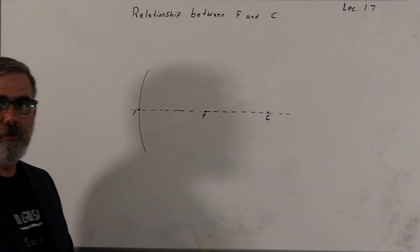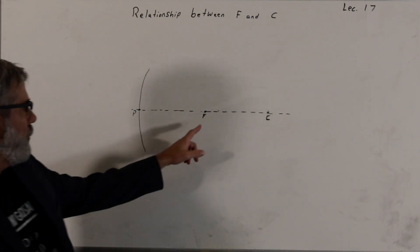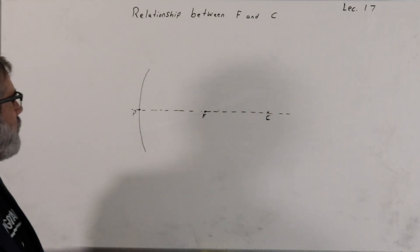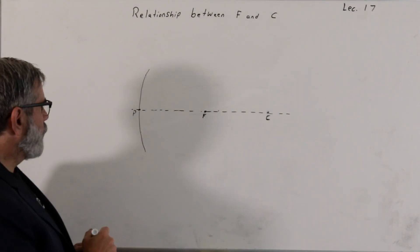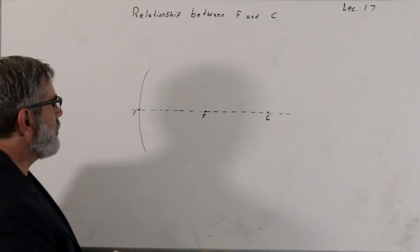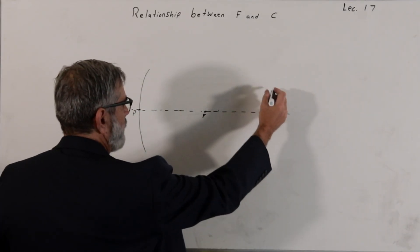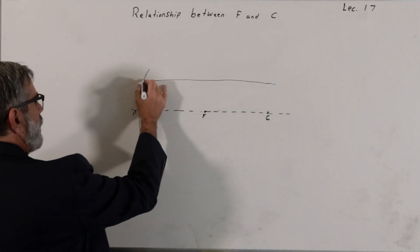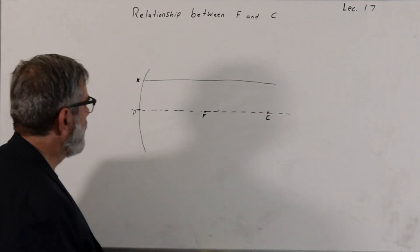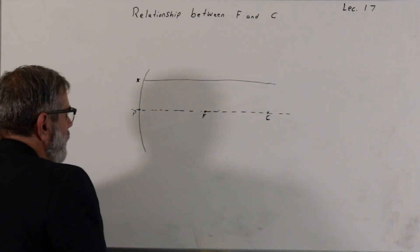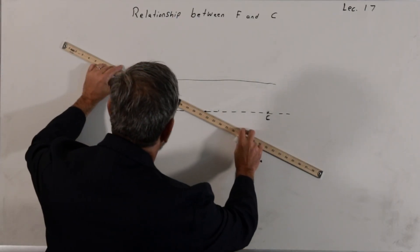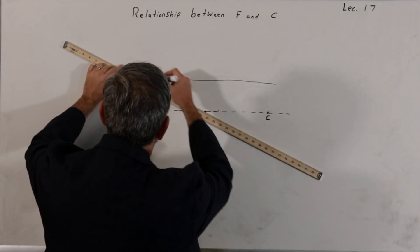I want to derive the relationship between the focal point and the radius of curvature of a spherical mirror. The way we're going to do this is to consider a parallel ray coming in at some height h above the optic axis, hitting a point x on the mirror, and we know it's going to reflect through the focus.